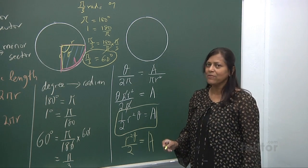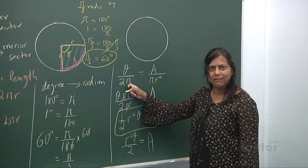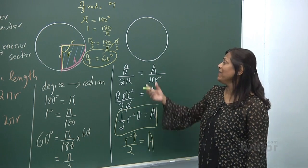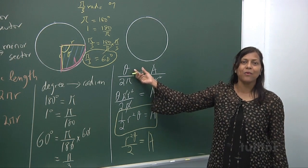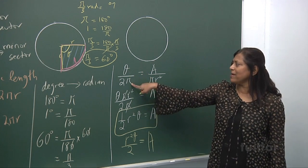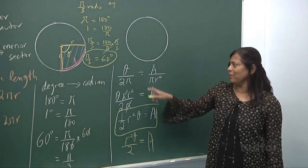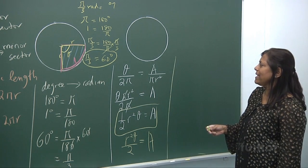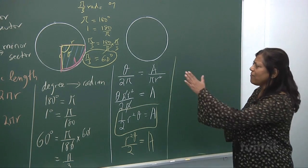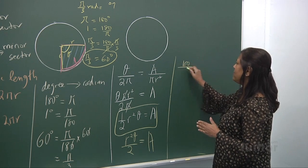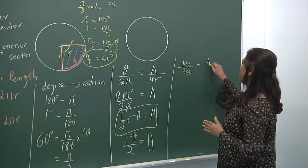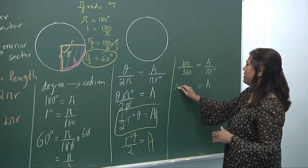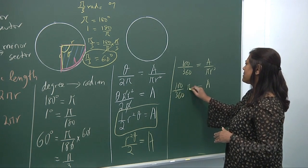That will be the area of the sector. This unit must be in radians — very important. If theta is in radians, this formula has to use radians too. Please take note. Now, even if it was in degrees: 100 degrees over 360 degrees equals area over πR². You bring the πR² up and get 100 over 360 times πR². Do you see the connection?